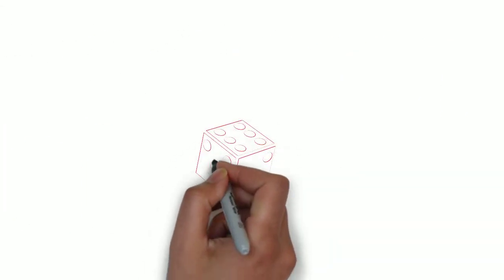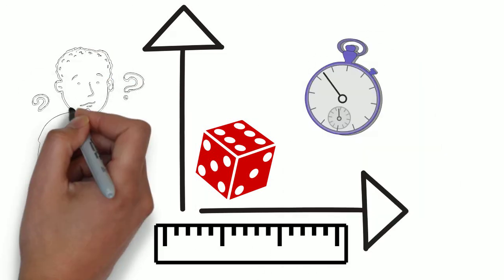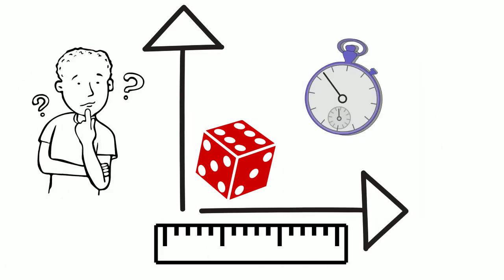Since there are physical limits to how accurately we can measure initial conditions, it is physically impossible to accurately predict which way up a dice will land.